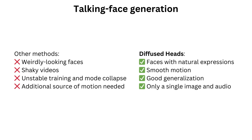Diffused Heads is the first successful method for talking face generation utilizing diffusion models. It synthesizes videos using only a single still image and an audio recording. The results are smooth and resemble real videos. The model also generalizes well to unseen identities and voices.